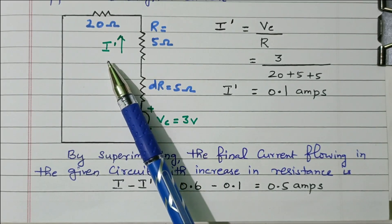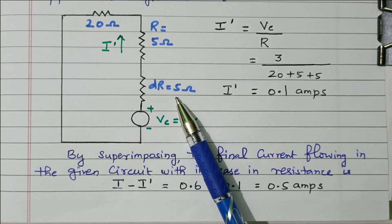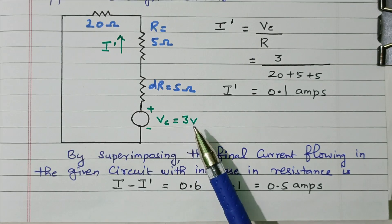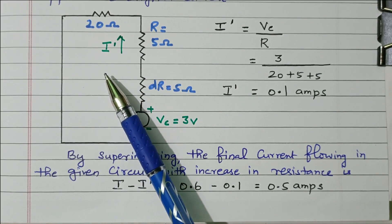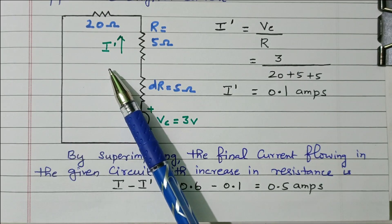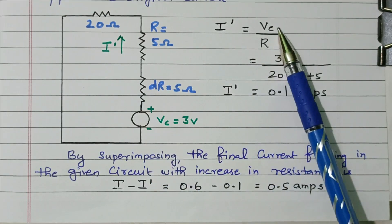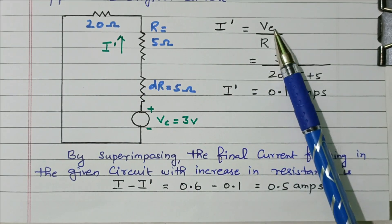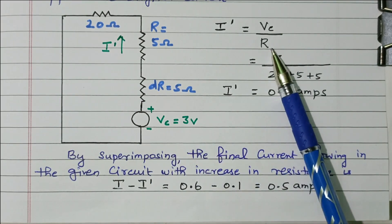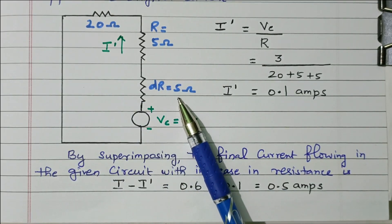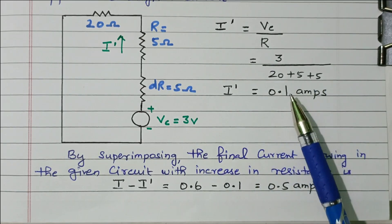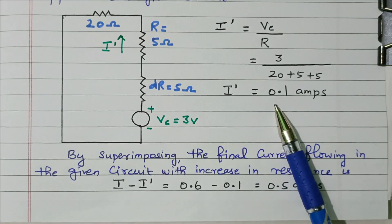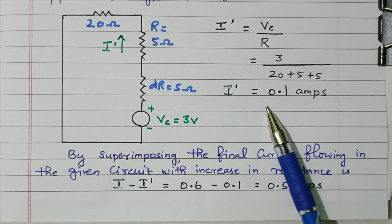Now we find I', the current due to the compensated voltage from the increase in resistor. I' = Vc / R. The voltage is 3V. The total resistance is 20 + 5 + 5 (the original 20 + 5, plus the additional change in resistor of 5) = 30 ohm. So I' = 3 / 30 = 0.1 ampere. The opposing current flowing in the circuit is 0.1 ampere.